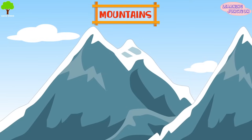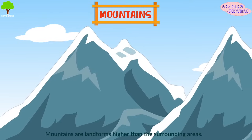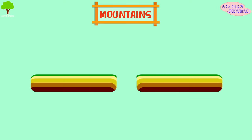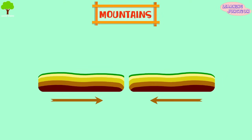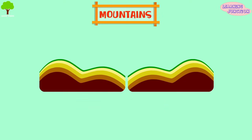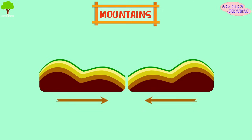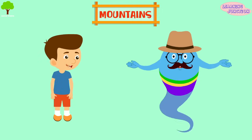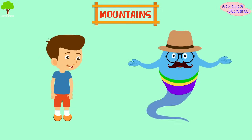Mountains. These are landforms higher than the surrounding areas. They're formed due to tectonic movements, earthquakes, volcanic eruptions, and erosion of the surrounding area caused by wind, ice, and water. There are mainly three types of mountains.